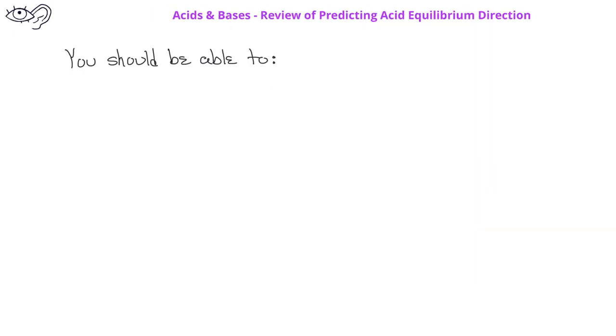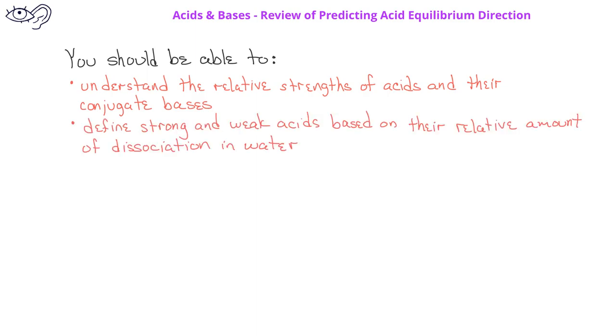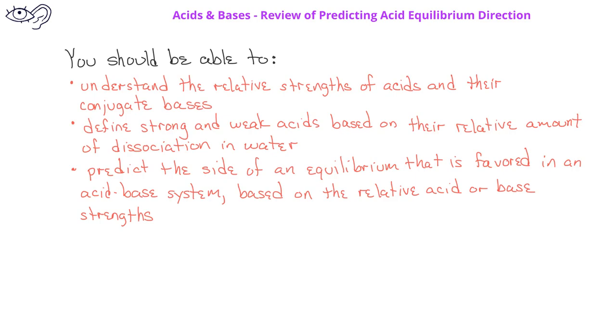By now, you should understand the relative strengths of acids and their conjugate bases. You should also be able to define strong and weak acids based on their dissociation in water. Finally, you should be able to predict the side of an equilibrium that is favored in an acid-base system based on the relative acid or base strengths present.